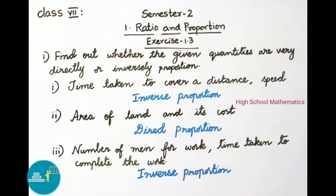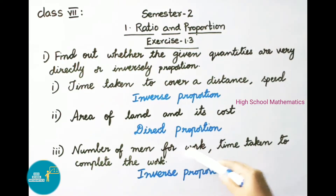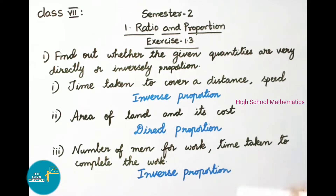Third one: number of men for work and time taken to complete the work. Here if one quantity increases the other quantity will be decreasing and vice versa. So the given quantities are in inverse proportion.